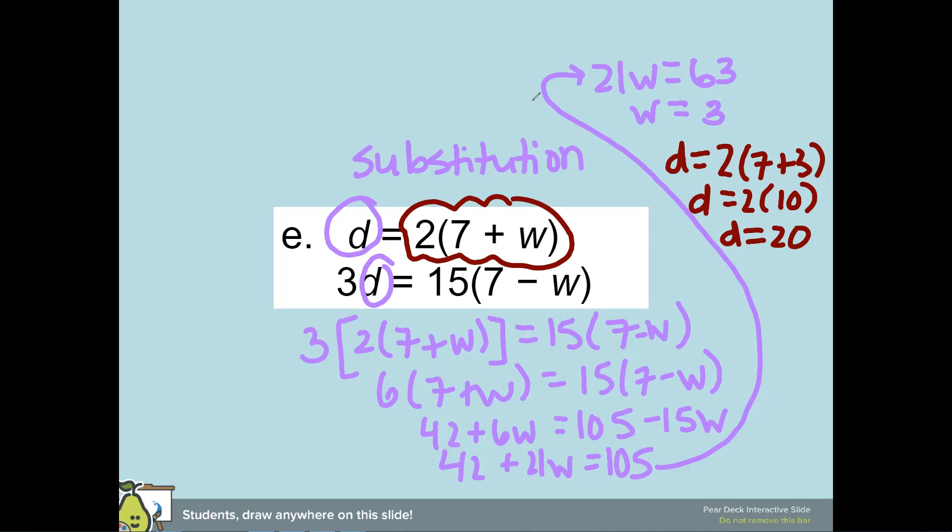And so when you are using different letters, a lot of times we will then—x and y—do it in alphabetical order. So my d is going to be 20 and my w is going to be three.